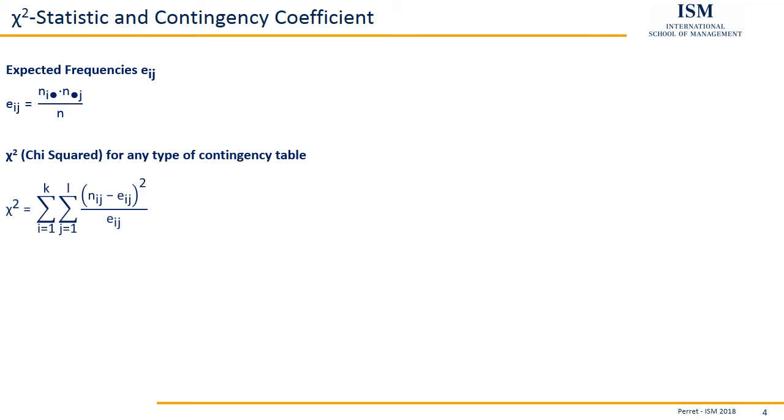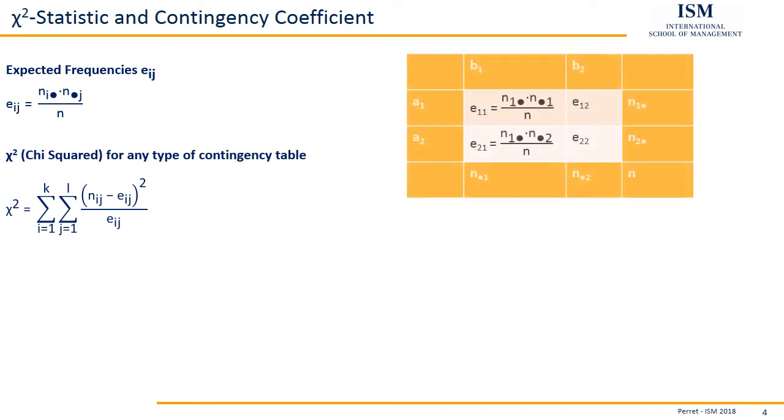If we have this, we can actually relatively easily get our g-squared statistic by just calculating the difference between the original values, the nij, and the expected values, Eij. This difference is then squared and divided by the expected values, by the Eij. This is done for all our entries. So if we have a 2 times 2 table, we do this 4 times. This is the two sums here in the formula. This just means do this for all entries.